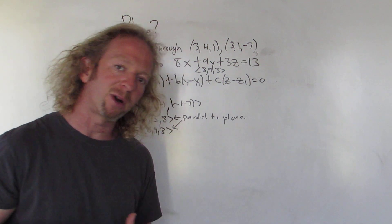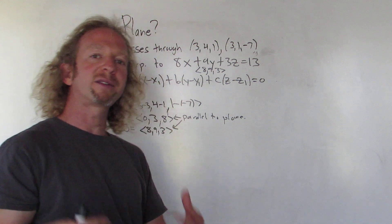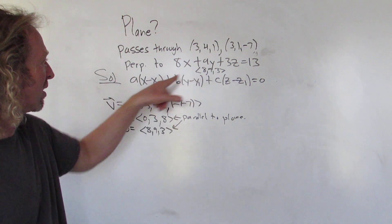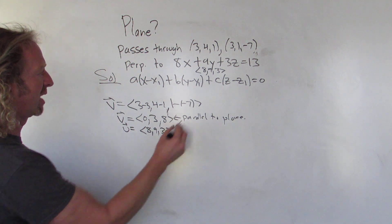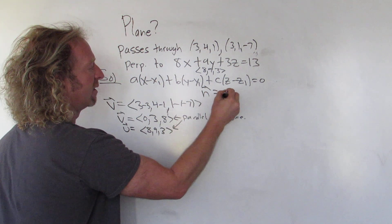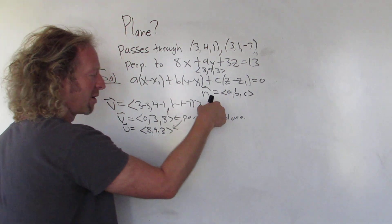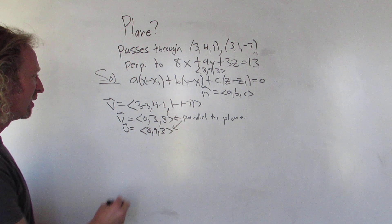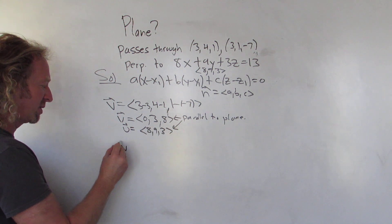We have two vectors that are parallel to our plane. So we can find the cross product to find a vector that is normal to our plane, which is what we need. Which is our n. That's our normal vector. So we'll take the cross product of these two. That'll give us n. Plug everything in and we're done. So let's do it. Let's do v cross u.